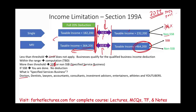What are SSB businesses? SSB — specified service businesses — are doctors, dentists, lawyers, accountants, consultants, investment advisors, entertainers, athletes, and YouTubers. What's common between all these businesses is the personal initiative and reputation of the owner themselves. As a YouTuber, for example, you cannot hire someone to do YouTube for you — you are the YouTube channel, you are the business.